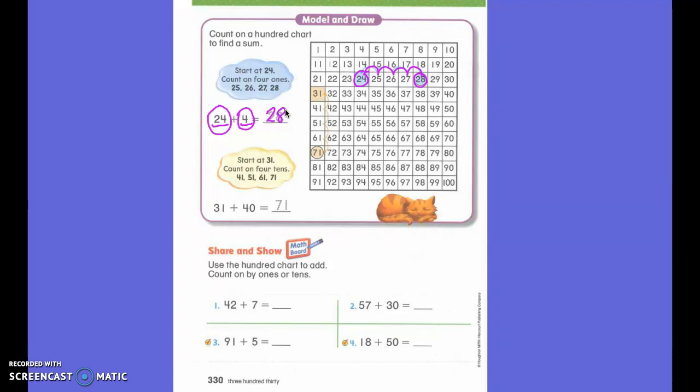Now, if I want to find 31 plus 40, I'm going to start at 31. But 40 is a big number. And I'm going to look at the tens place. The tens place shows me I move 4 down because it is a tens.